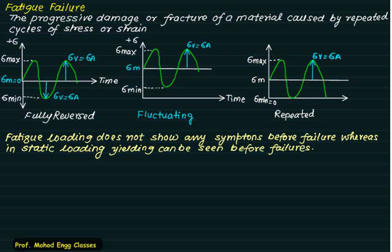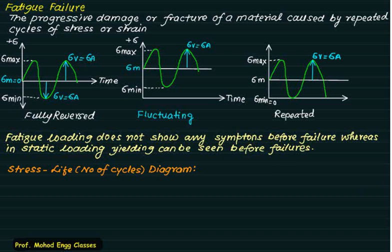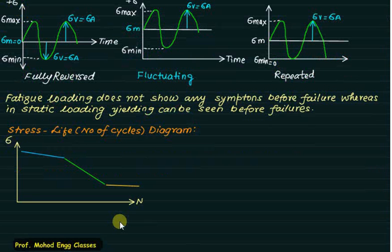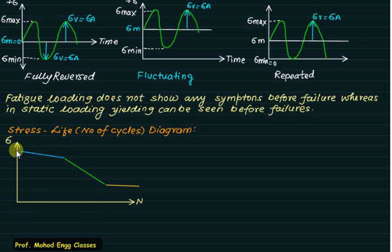Fatigue loading does not show any symptoms before failure, unlike static loading where yielding is visible before failure. To calculate the stress-life relationship, the SN curve is used — a diagram plotting sigma on the y-axis versus number of cycles on the x-axis. The x-axis is a semi-log axis and the y-axis is a linear axis.